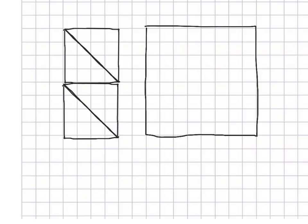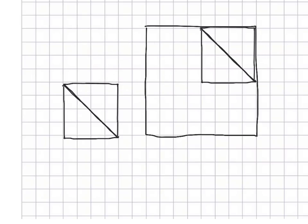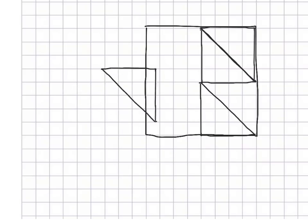The idea would be I could take these triangles and move them over here. You can see I have made a half. It's obvious to see that it's a half.